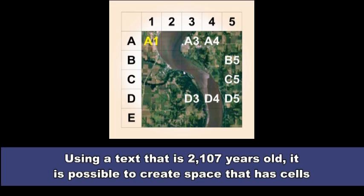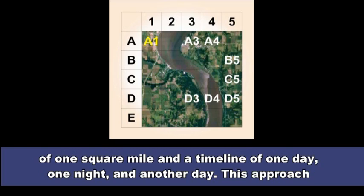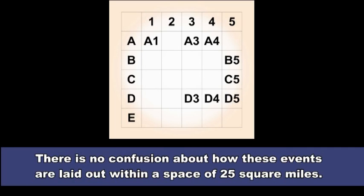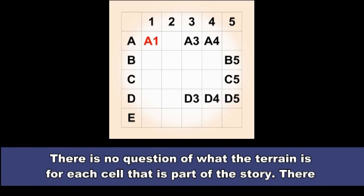Using a text that is 2,107 years old, it is possible to create a space that has cells of one square mile, and a timeline of one day, one night, and another day. This approach is clear and subject to careful examination. The grid has 25 cells. The time is 36 hours. There is no confusion about how these events are laid out within a space of 25 square miles. There is no question of what the terrain is for each cell that is part of the story.